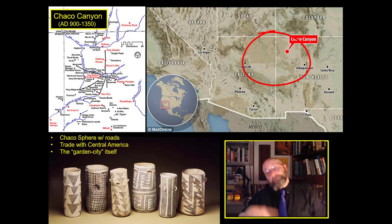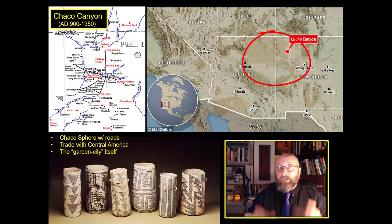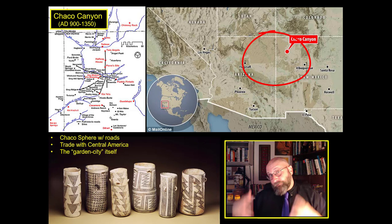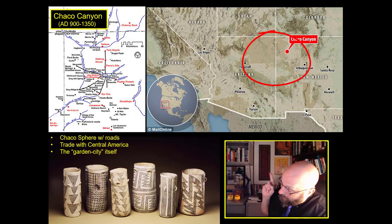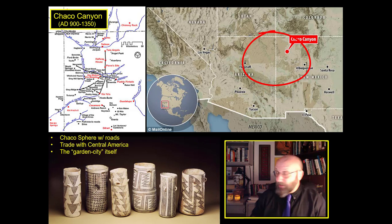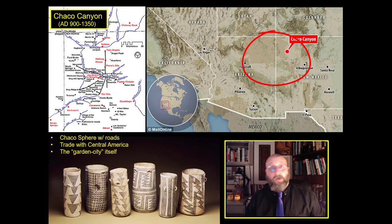Chaco Canyon is quite clearly connected to the really complex societies down in Central America — the Aztecs, the Maya, and their predecessors. We know this because we have direct connections between Chaco Canyon and these southern societies. We have materials from Central America that have been found at Chaco Canyon, including materials found in those vessels on the lower left. Those are chocolate pots. They were recovered from a tomb at Chaco Canyon, and they contained chemical evidence of theobromium, which is the active ingredient in chocolate. Chocolate does not grow in the American Southwest, so for chocolate to be there, it had to have been imported from regions to the south — Central or Southern Mexico even.